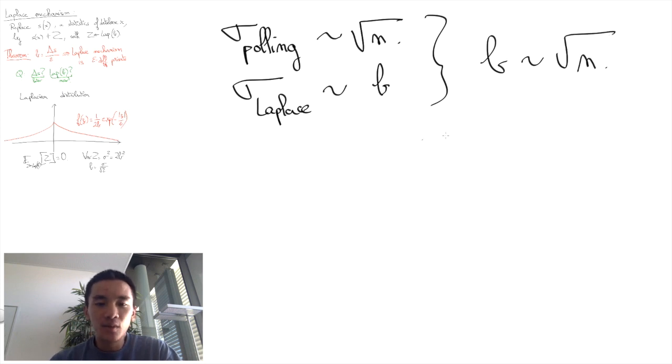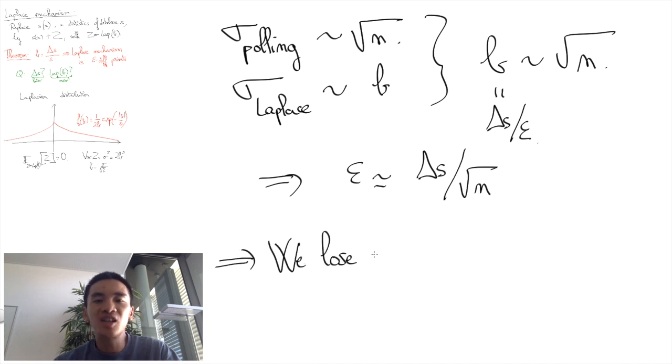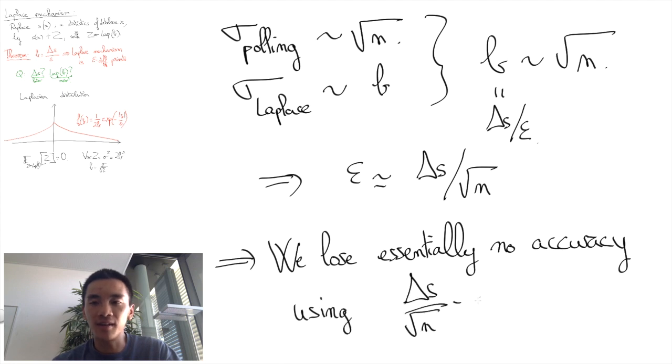Since B is equal to delta S divided by epsilon, this means that we can fix epsilon to be of the order of delta S divided by the square root of n, i.e., we can compute an essentially accurate poll with delta S divided by square root of n differential privacy.